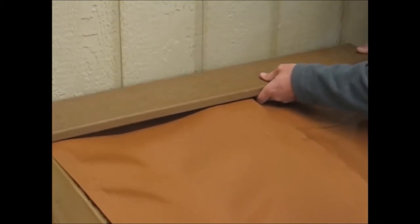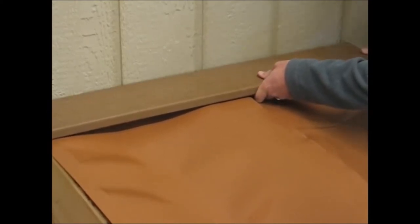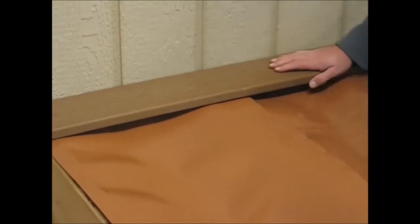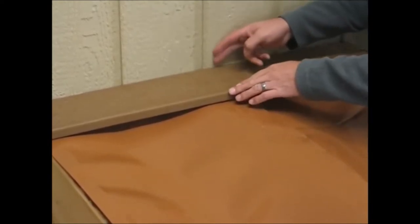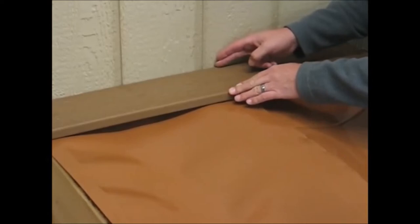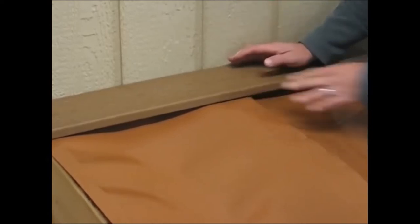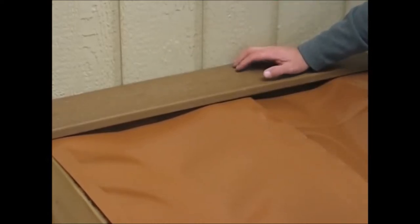Once that's done, we can install the deck board and attach to the joist. Whether you're using a hidden fastener system or a standard face screw, we can go ahead and install the decking.